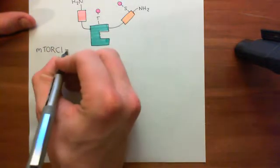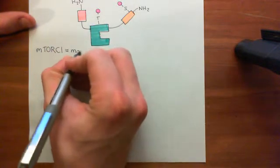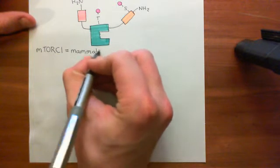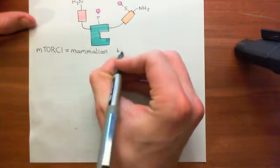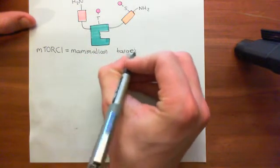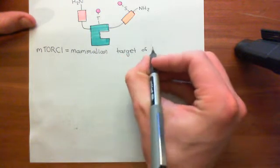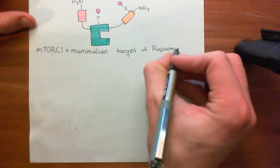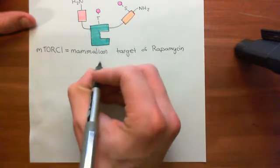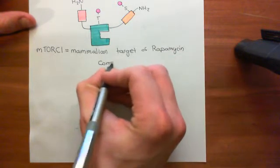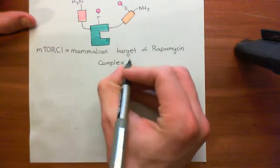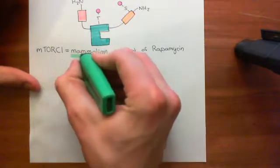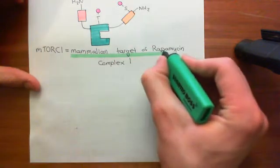mTORC1 stands for the mammalian target of rapamycin complex 1. The M is for mammalian, the T is for target, the O is for of, and the R is for rapamycin. Then the C stands for complex, and the 1 for 1.